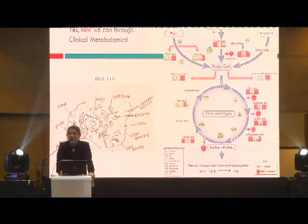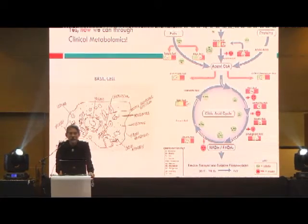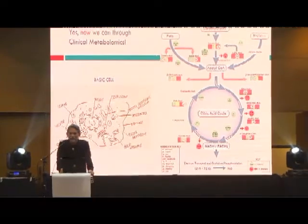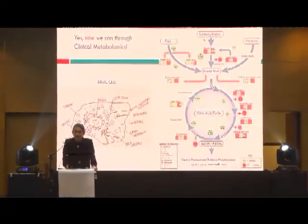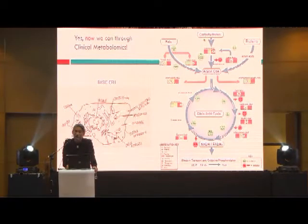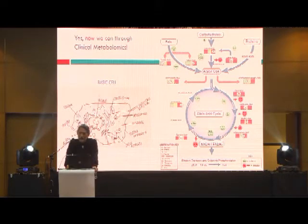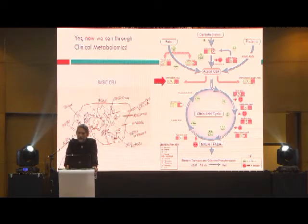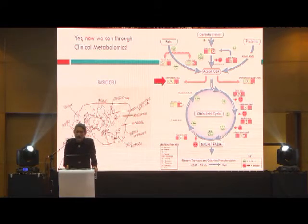Now we can test for clinical metabolomics. I know many of you skated by biochemistry, but unfortunately it is now upon us to review it. Tonight, in particular, we are interested in beta-hydroxybutyric acid. You can see here that fats, carbohydrates, and proteins all come together into the central molecule, acetyl-coenzyme A, for burning into the citric acid cycle.